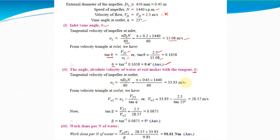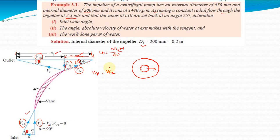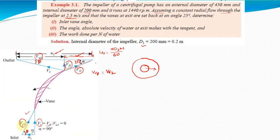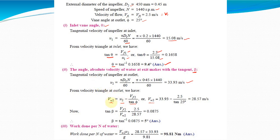Following this process: first calculate u2 using pi D2 N divided by 60. Then from the outlet velocity triangle, vw2 equals u2 minus vf2 divided by tan phi. Then tan beta equals vf2 divided by vw2, giving beta. The result is beta equals approximately 5 degrees.